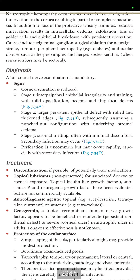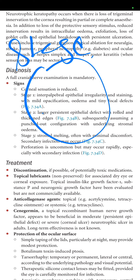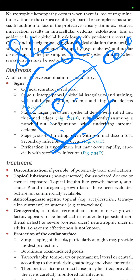Corneal sensations are reduced. Stage one presents with interpalpebral epithelial irregularity and staining with mild opacification, edema, and tiny focal defects. In stage one, there is a very tiny focal defect with mild opacification and edema, and the interpalpebral epithelium may be irregular and stained.